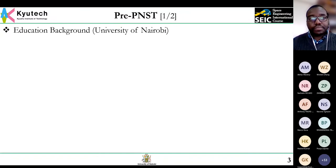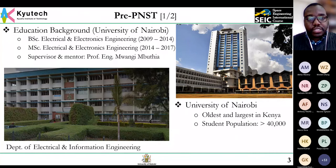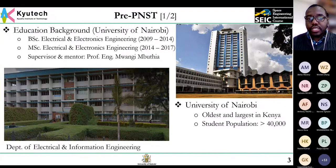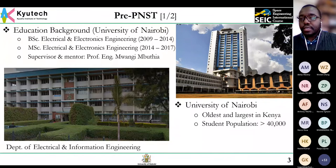My education background: University of Nairobi, Bachelor of Science in Electrical and Electronics Engineering, graduating in 2014. I then commenced my MSc Master's in the same area and department, graduating in 2017, under the supervision and mentorship of Professor Mwangi Mbudia. The University of Nairobi is the oldest and largest in Kenya with a current student population of over 40,000. My pre-PNST experience began with the first Kenyan university nanosatellite project, a collaboration between the University of Nairobi and the University of Rome Sapienza, with principal investigators Professor Mwangi Mbudia and Professor Fabio Santoni.